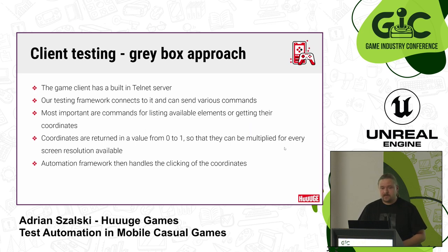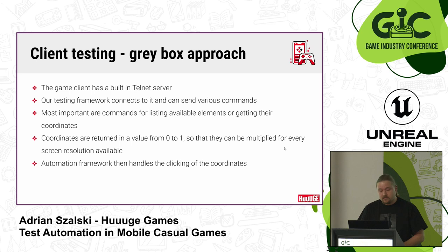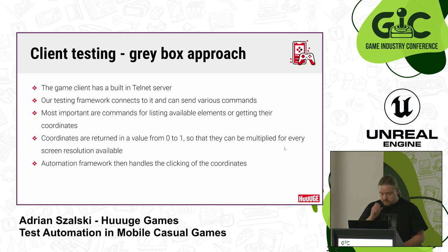So how does it work exactly in our projects? We have a built-in telnet server inside the games - this is only on debug builds, there's no trace of it on release builds, in case anyone was worried about security. You can connect to this server from inside the tests or from your terminal to explore what commands are available. The most important commands are for listing all elements, listing only the visible elements, getting coordinates, or triggering other actions. We return coordinates as a value from 0 to 1, so you can multiply by the screen resolution when testing on different Android resolutions. Then the automation framework handles the clicking itself.